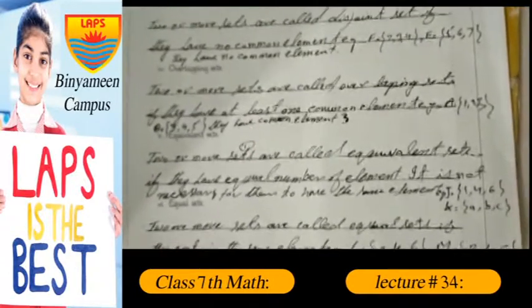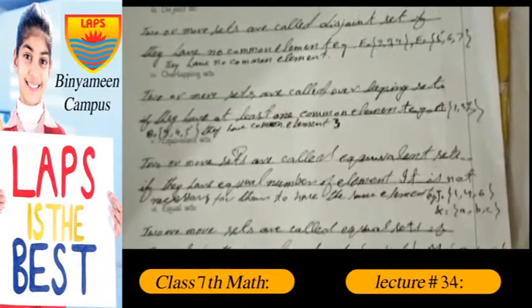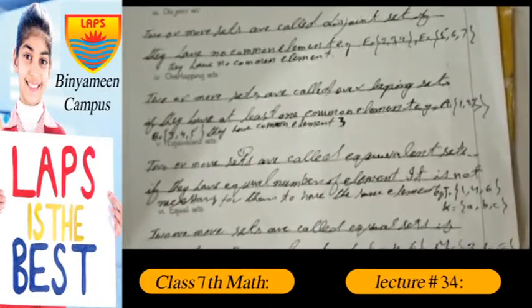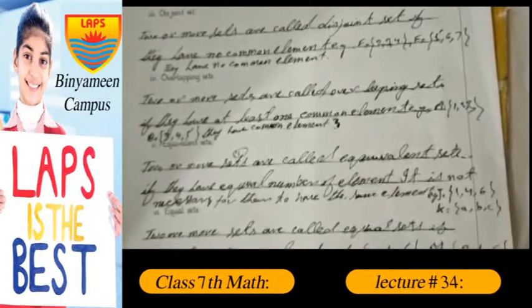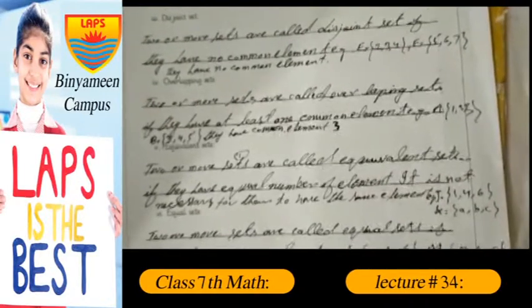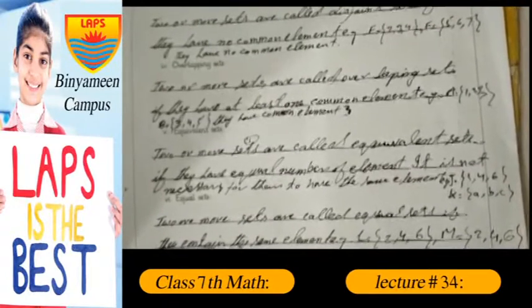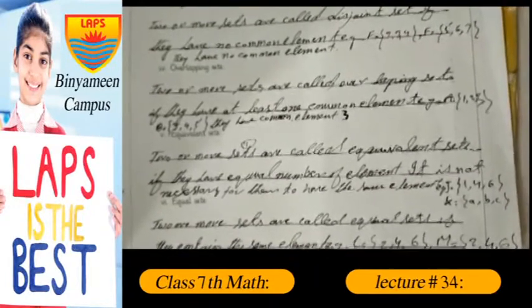Overlapping set: two or more sets are called overlapping sets if they have at least one common element. For example, set A equals {1, 2, 3} and set B equals {3, 4, 5}. They have common element 3.